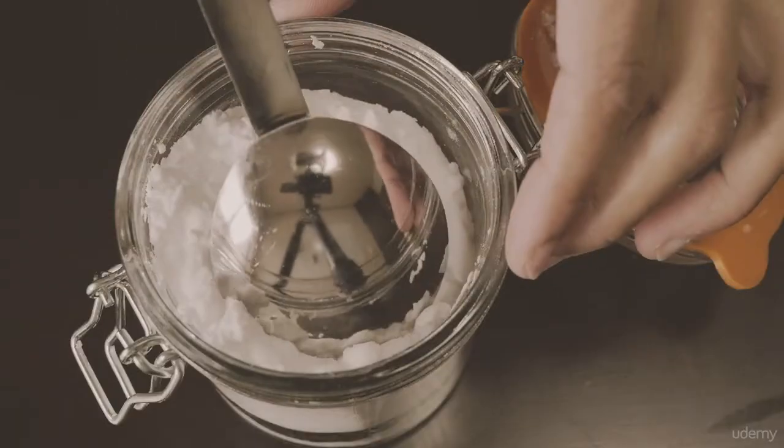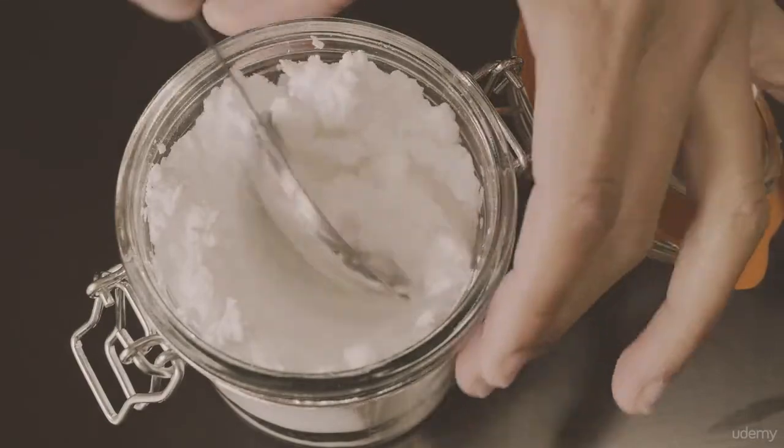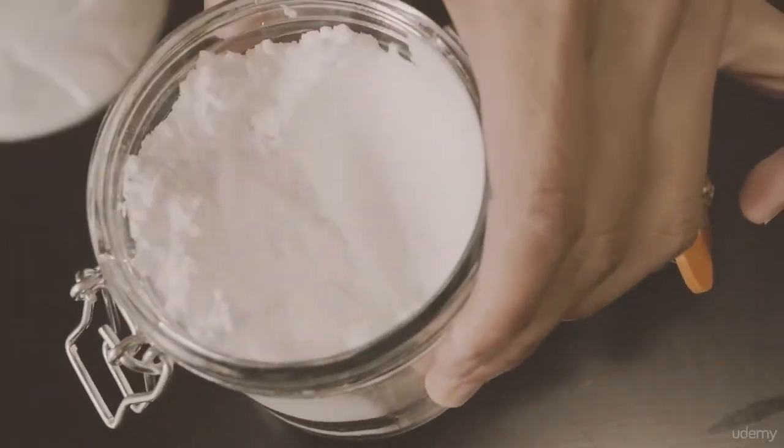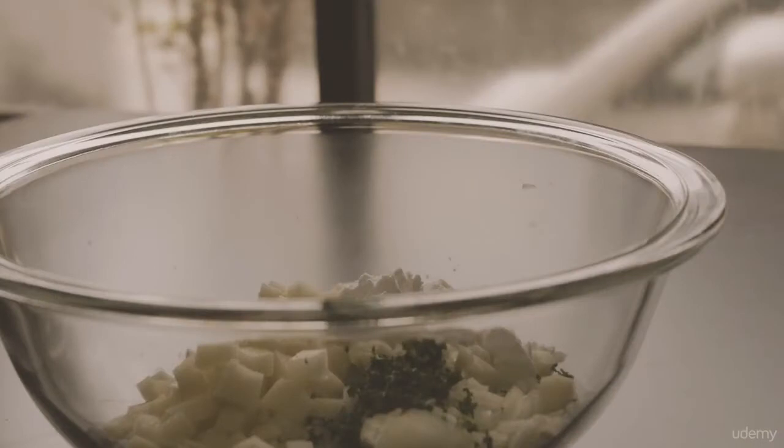In a small bowl, toss in the chopped onions, drained potatoes, and chopped parsley. Add mayonnaise, cornstarch, and a little bit of pepper.